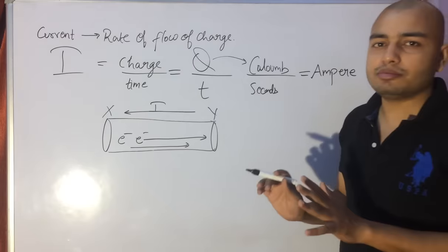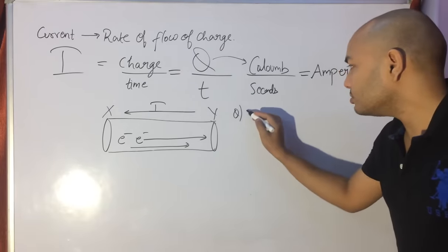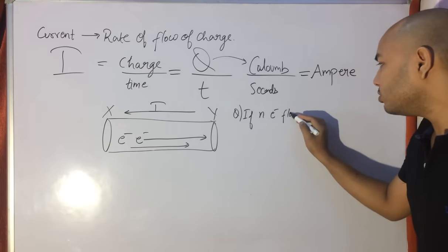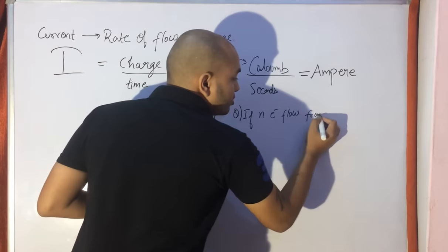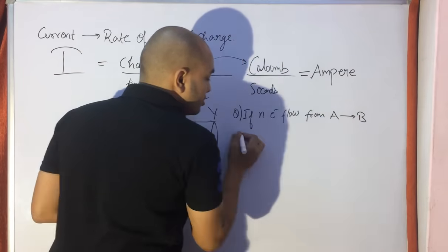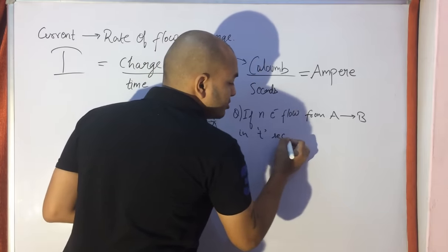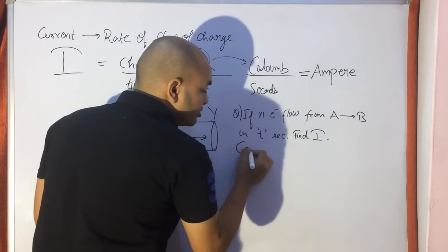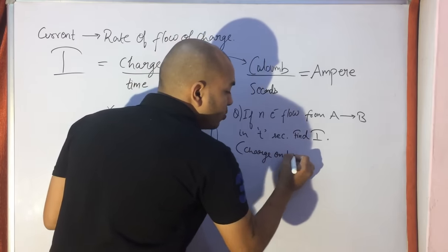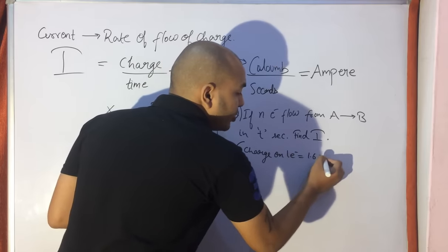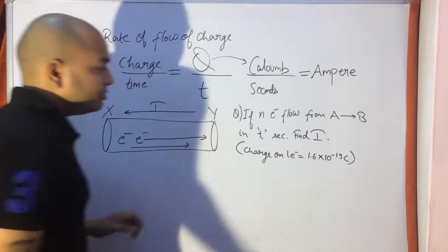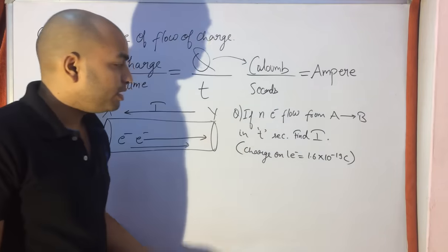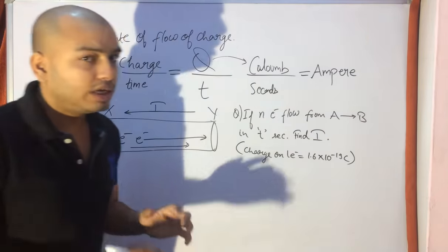Now here is a question: if N electrons flow from A to B in T seconds, find the current. Given: the charge on one electron is 1.6 × 10⁻¹⁹ coulombs. We have N electrons flowing from A to B in time T seconds, and we need to find the current.